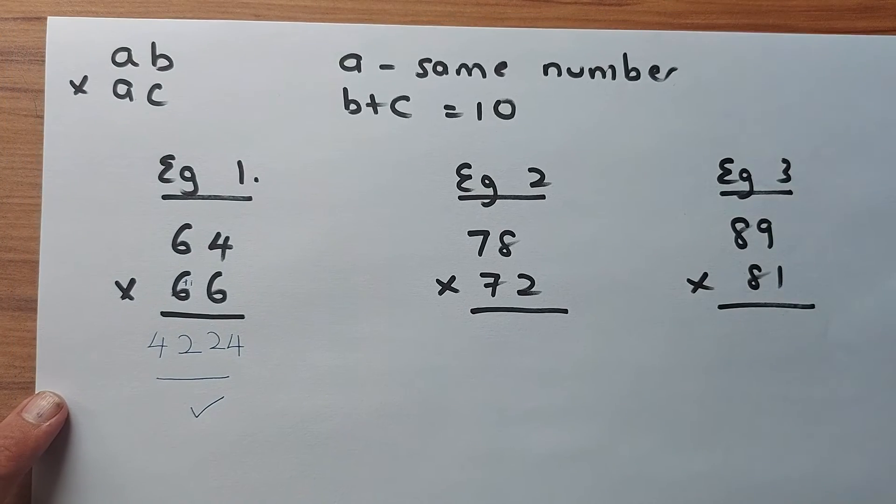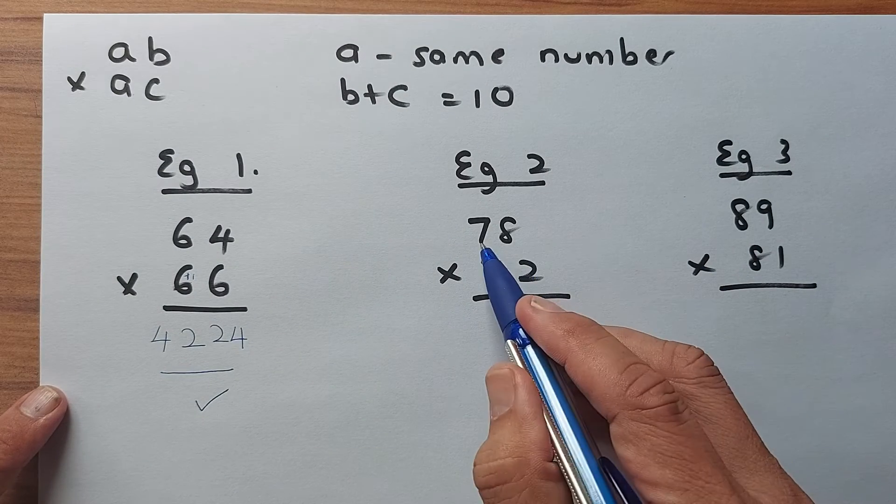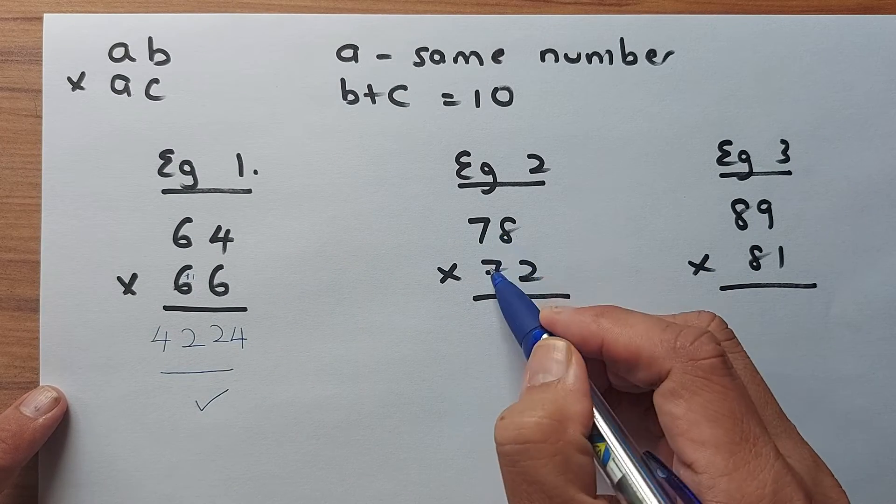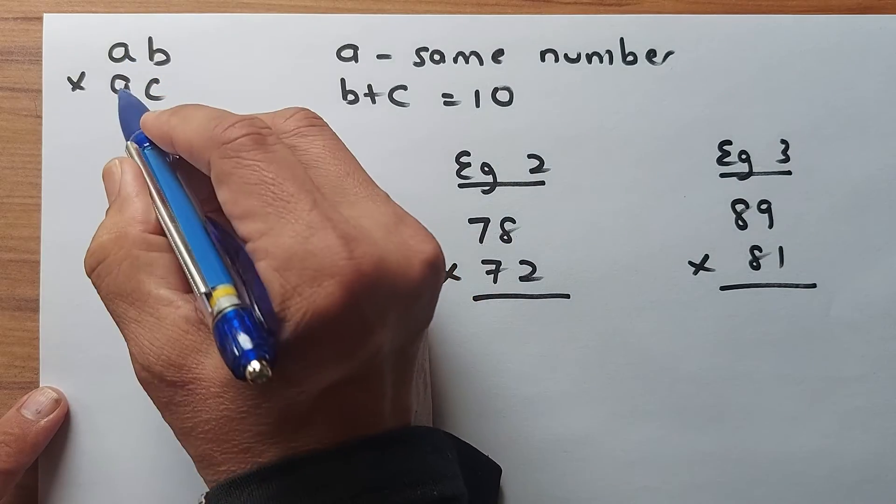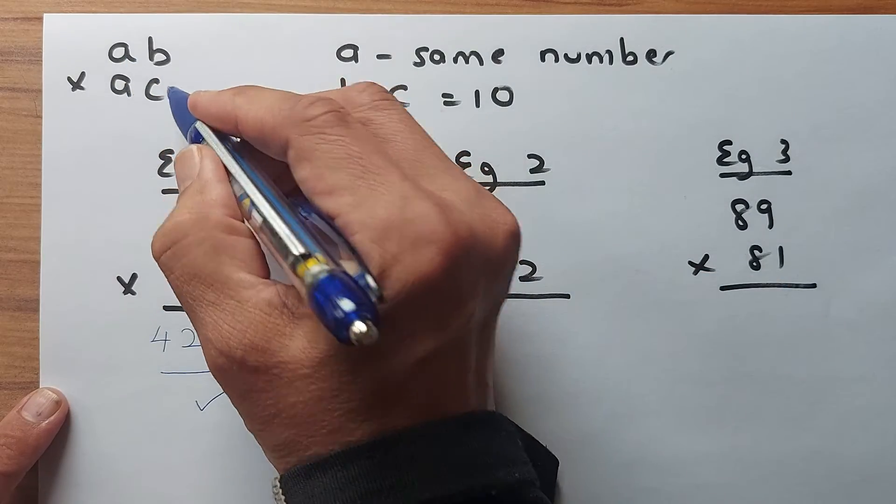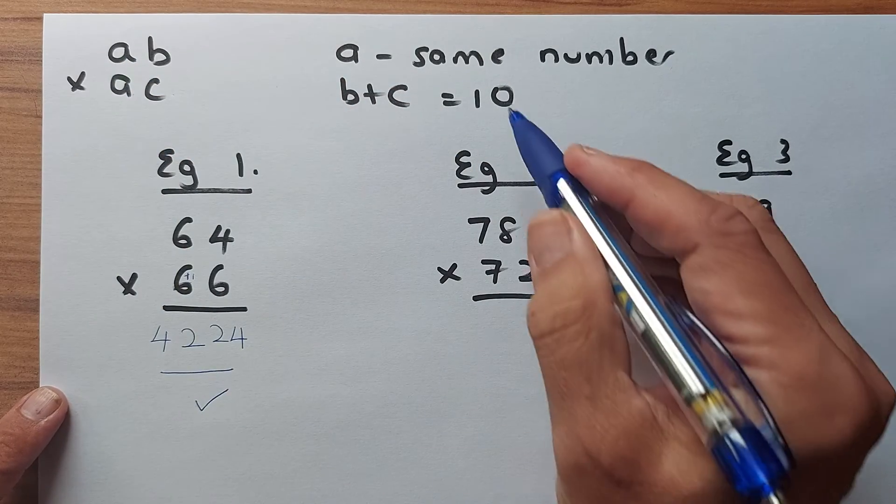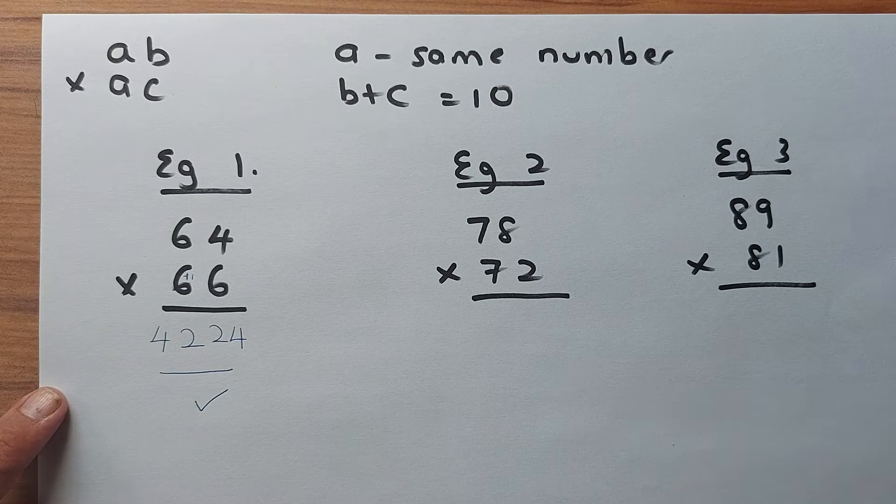Let's look at example 2. In this case 78 times 72. So the first digit 7 is the same so A and A are the same. And then the second digit 8 and 2 they must add up to 10. So this will work too.